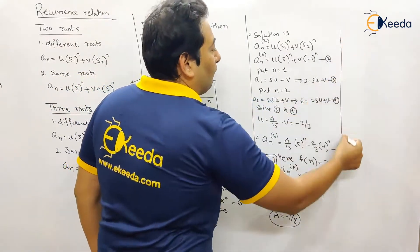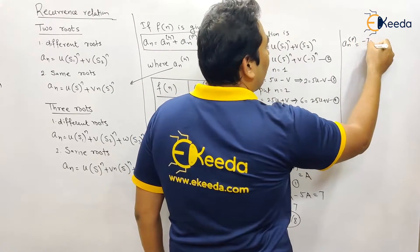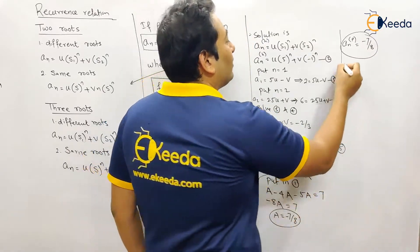We got the value of a. So what is A_np? A_np is actually a, so that is -7/8. We got A_np and we got A_nh, so what is the solution?